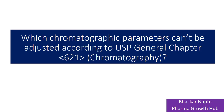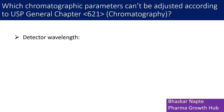My name is Bhaskar Navte. I am the founder of Pharma Growth Hub. Today we are going to talk about those important parameters. The first parameter is detector wavelength, and this parameter cannot be adjusted according to USP General Chapter 621.